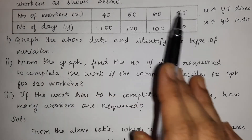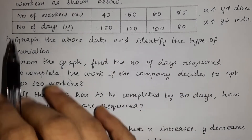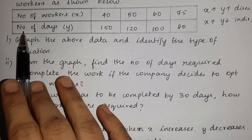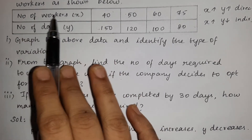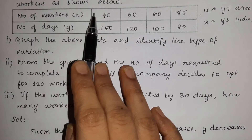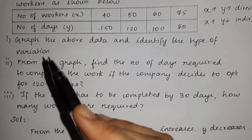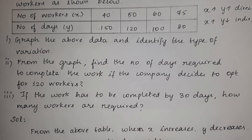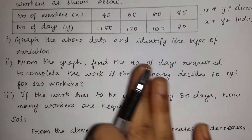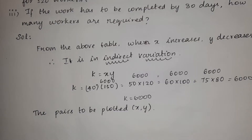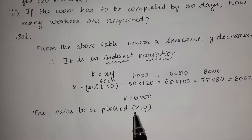Now we have to plot the data on a graph. The number of workers is the x-axis and the number of days is the y-axis. We have to plot the pairs x, y from the tabular column.